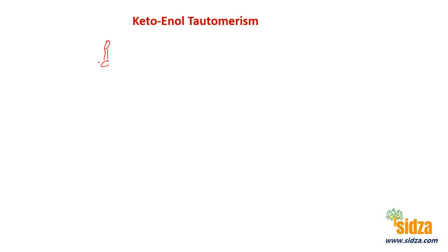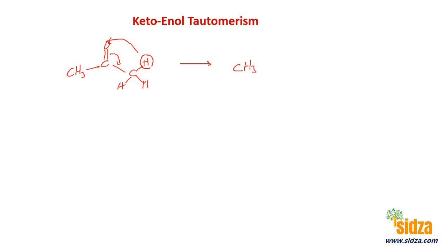Here we have an acetone with a C=O and CH3 groups on either side. In this molecule, the hydrogen from this particular carbon can shift to the oxygen, and this double bond can shift. That means you get another structure: CH3-C(OH)=CH2, with a double bond between these two carbons.